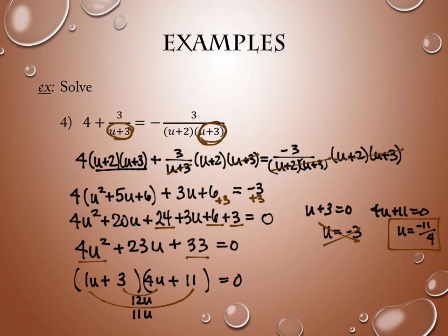If you want to, you could write that as a decimal — it would be negative 2.75, which is a terminating decimal. So we have one solution: U equals negative 11 fourths. It's a messy one on lots of counts.